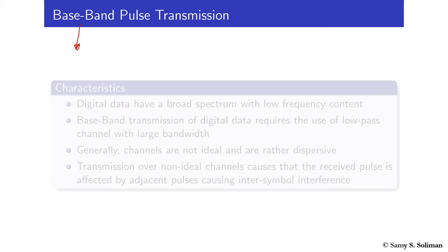So I don't have frequency up-conversion, and at the receiver I don't have frequency down-conversion. What we say about baseband transmission is contrasted with bandpass transmission. The only difference is that in bandpass transmission, the transmitter performs modulation or frequency up-conversion, so at the receiver we will have frequency down-conversion. We will focus on baseband communication.